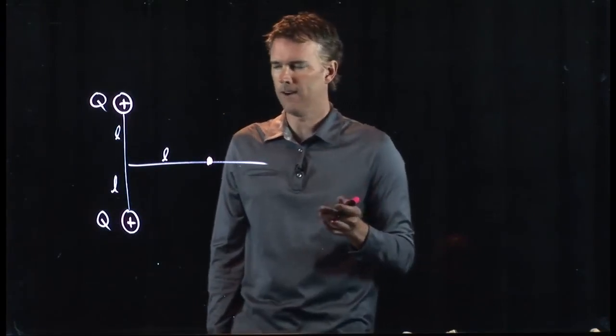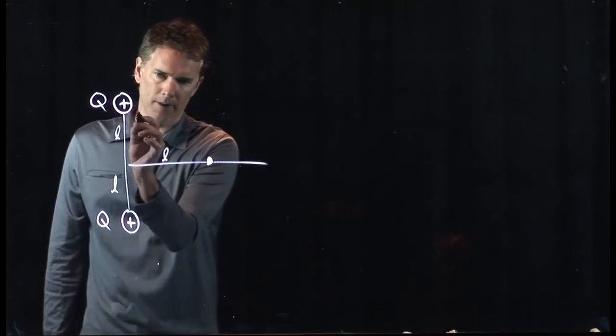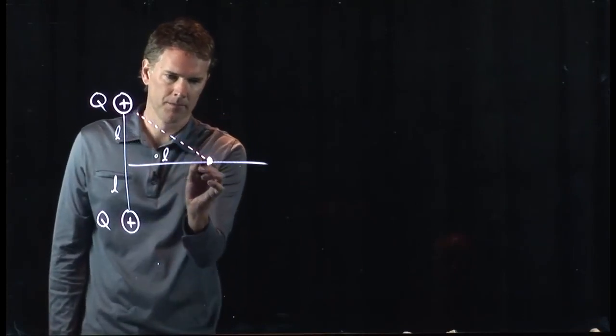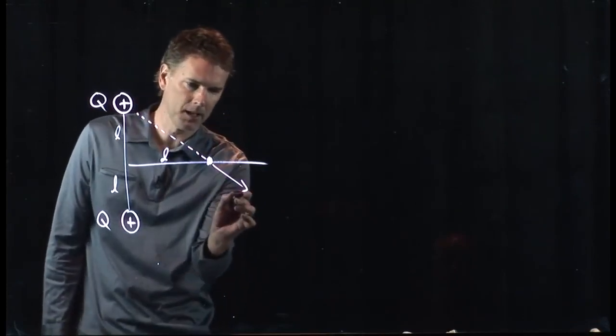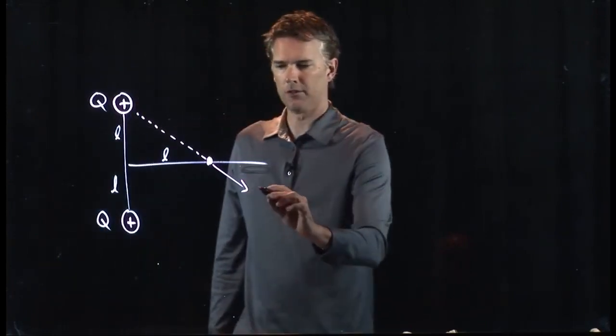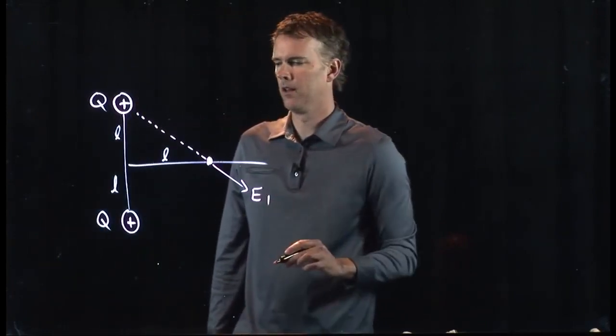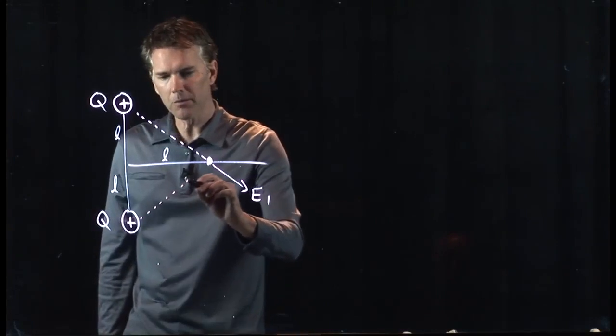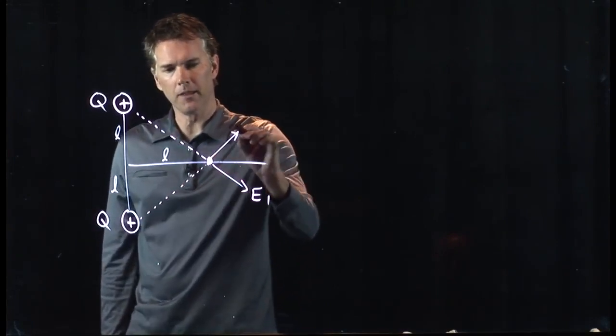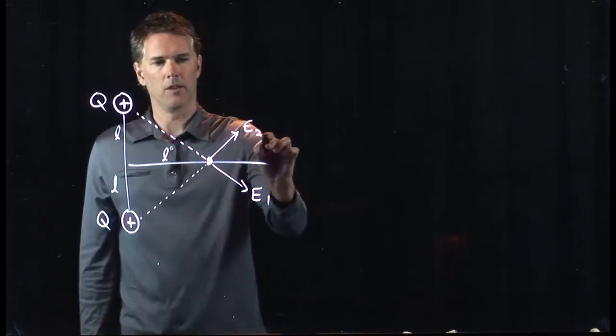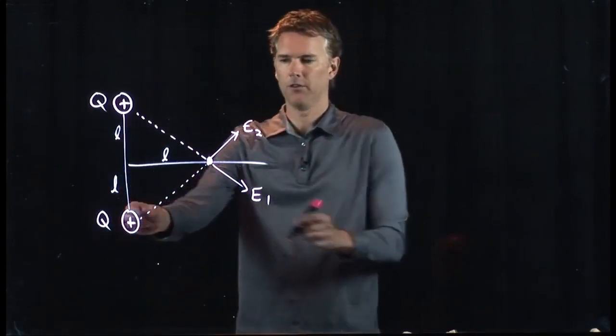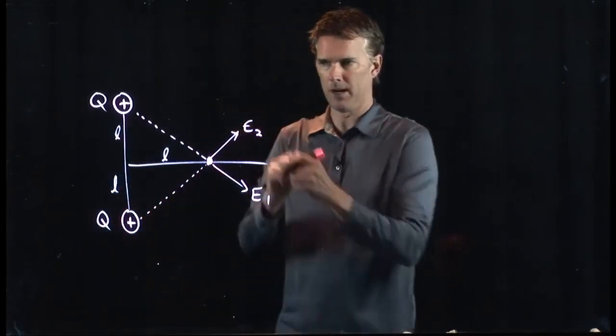How do we do it? Well, we know that we have an electric field from this one. It must be pointing in that direction. Let's call that E1. We know we have an electric field from this one that's pointing in that direction. Call that E2. Those are positive charges, so E field lines leave the positive charge.